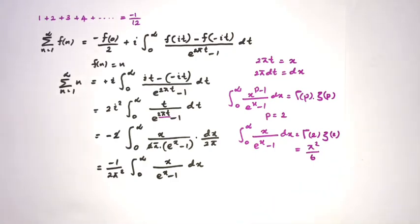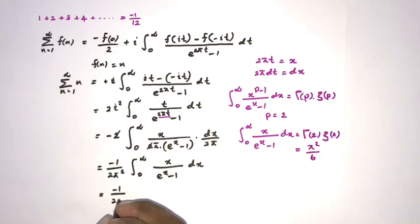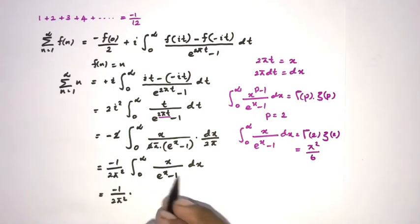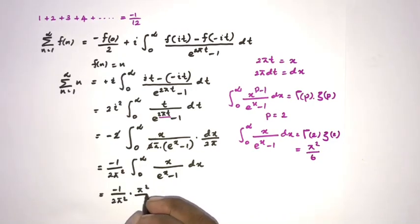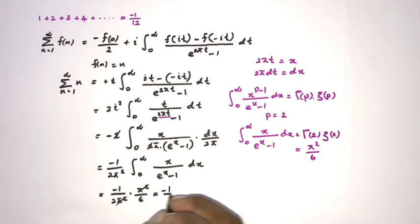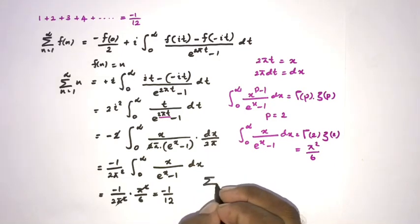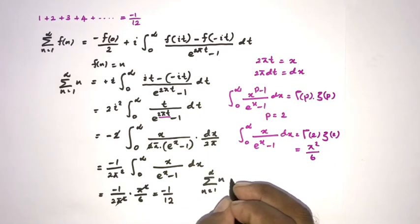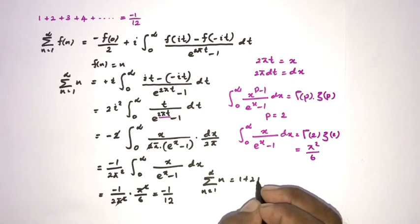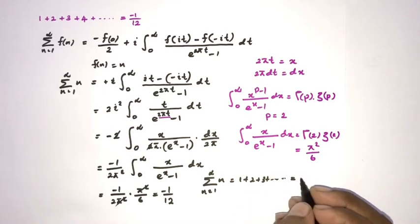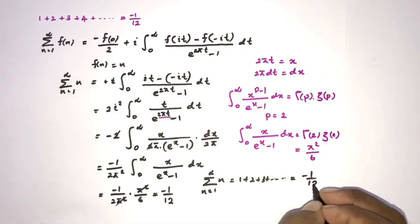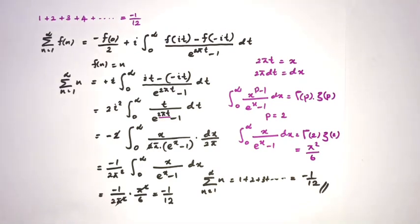We know Γ(2) = 1 and ζ(2) = π²/6. So minus 1 over (2π²) times π²/6 gives us: the π² terms cancel, leaving minus 1 over 12. Therefore the sum 1 + 2 + 3 + ... going to infinity equals minus 1 over 12. Thank you for watching.